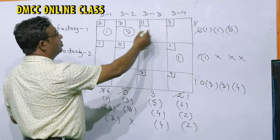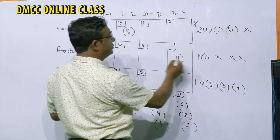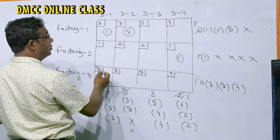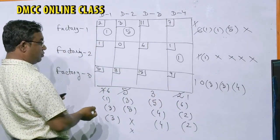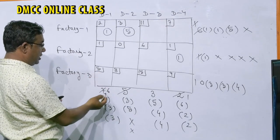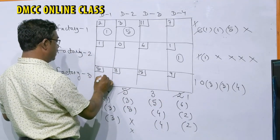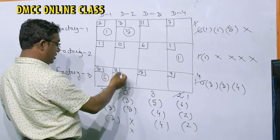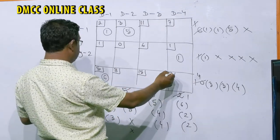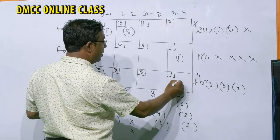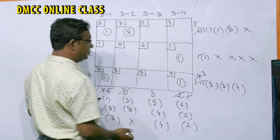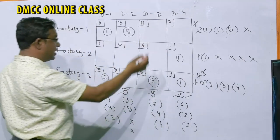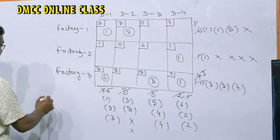Now only row three remains. Choose the smallest cost 5 at destination one; demand remaining is 6, supply is 10, allocate 6. Then the next cost is 8 at destination two — already exhausted. Go to destination three: cost 15, allocate 3. Then destination four: cost 9, remaining demand is 1, allocate 1. Finally the last cell gets 3. All cells are now allocated.